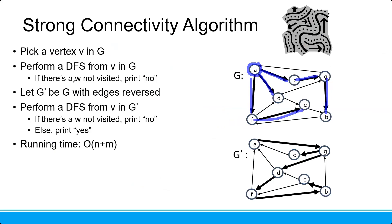And if there is a W not visited, print no. So it means every one of the nodes must be reachable. We already verified this, so we can perform the next step.